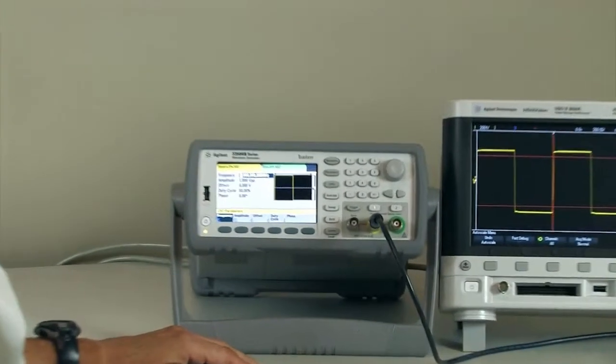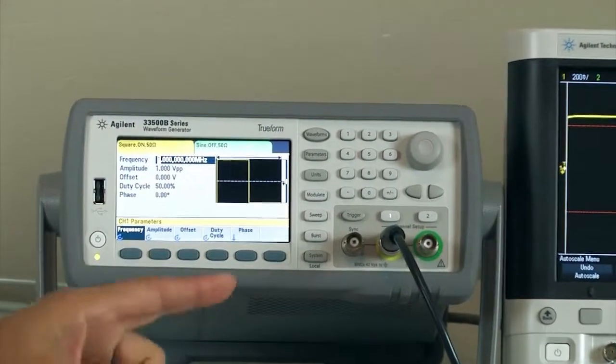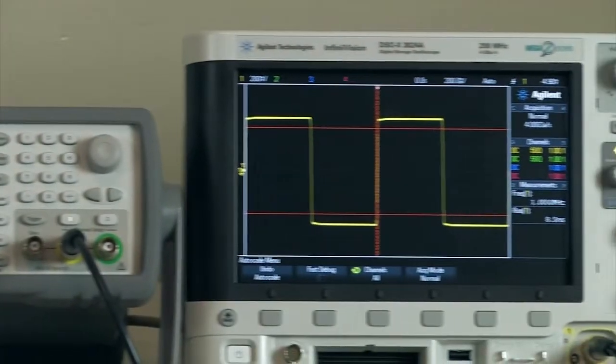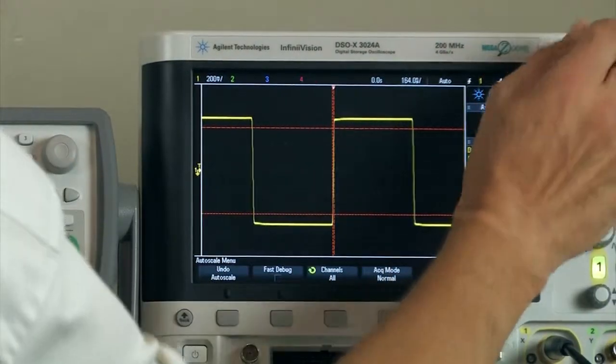So let's show you what this looks like with the new 33,500 series family. We're outputting a square wave at one megahertz, one volt peak to peak. You can see it on the oscilloscope and it looks like a square wave. Now let's look at the time scale on the oscilloscope.